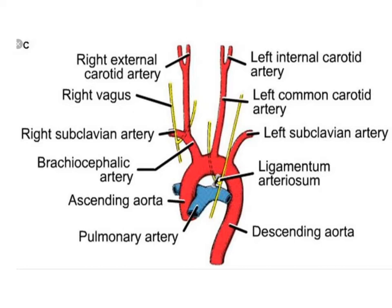Those vessels are the brachiocephalic vessel, the left common carotid artery, and the left subclavian artery. So if you were to get those three vessels in the picture, you've pretty much gotten as much as you can. You also want to get as much of the ascending aorta as you can.